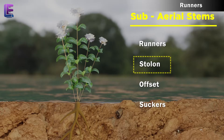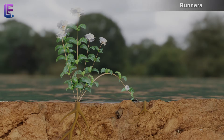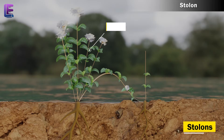B. Stolon: In some plants, a slender lateral branch arises from the base of the main axis. After growing aerially for some time, they arch downwards and form adventitious roots. These are called stolons. For example, jasmine.